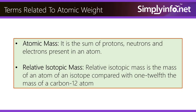Terms related to atomic weight. Atomic mass: it is the sum of protons, neutrons, and electrons present in an atom. Relative isotopic mass: it is the mass of an atom of an isotope compared with one twelfth the mass of a carbon-12 atom.